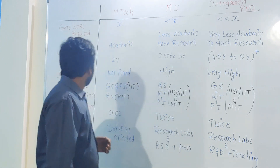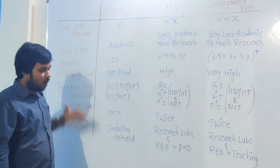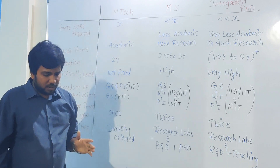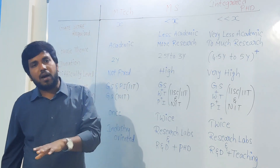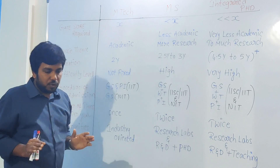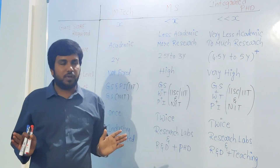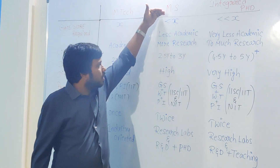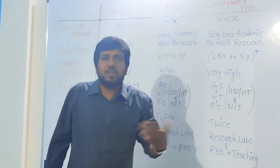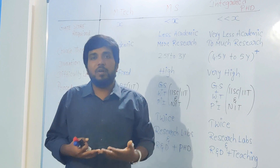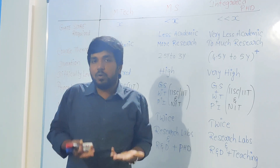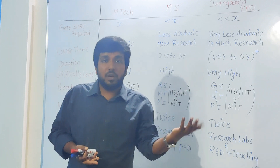Regarding duration: MTech in any college — IIT, NIT, or IISC — takes two years, and it is a fixed duration. For MS, the average is 2.5 years and the maximum is three years. Sometimes it may be more — it depends on compatibility between your project work and the professor's expectation. If you are not doing well enough, the course duration may increase to 3.5 years.